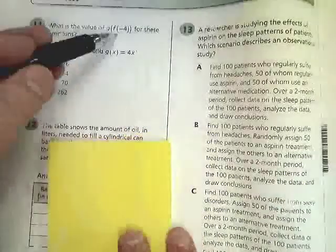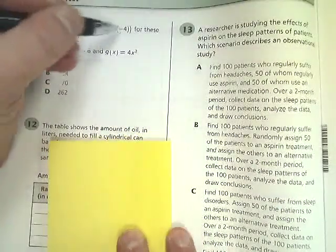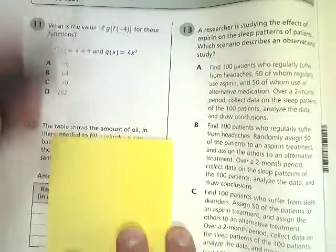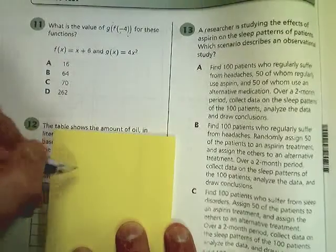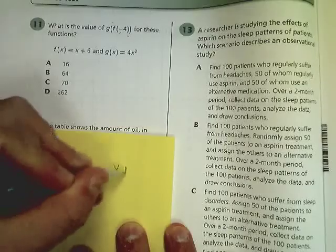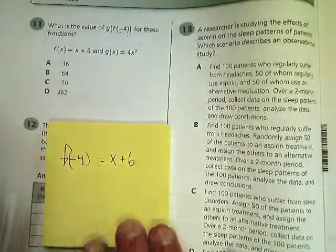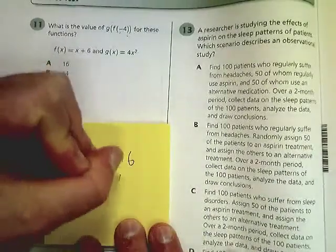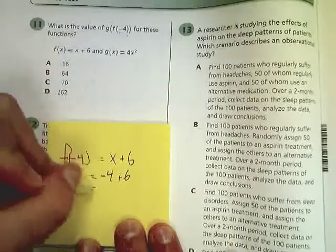So when I have g(f(-4)), I always do the inside one first. You have to get that one fixed before it can get to the outside. So I'm just going to plug in f(-4), where f(x) is x plus 6. So instead, I'm going to type negative 4 plus 6, which gives me positive 2.